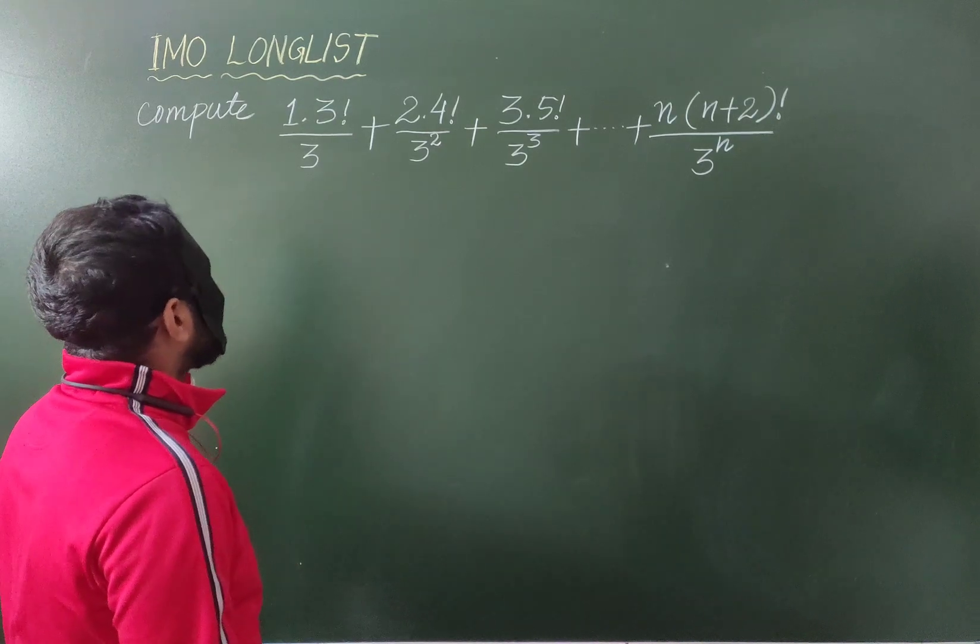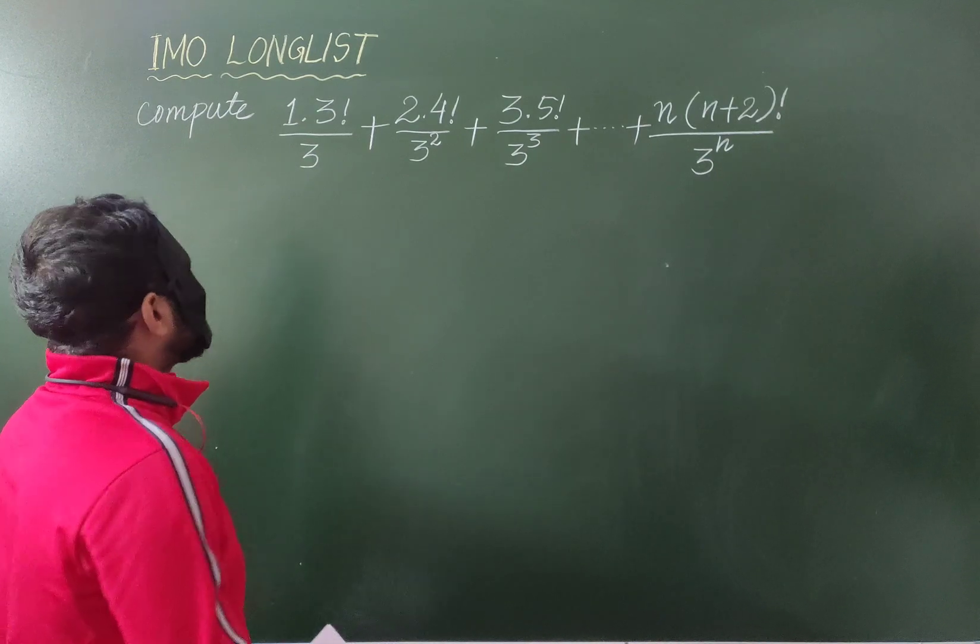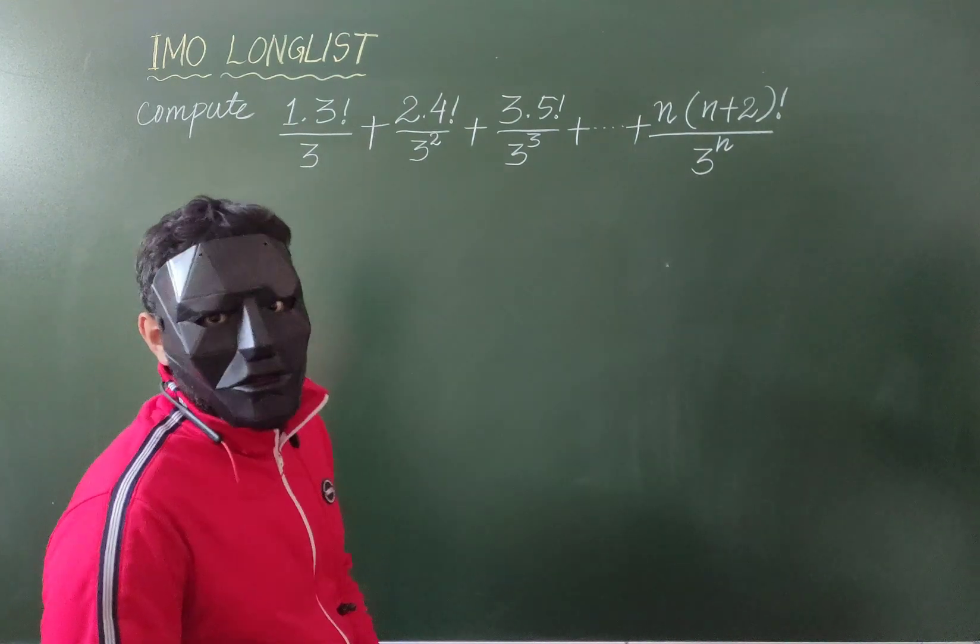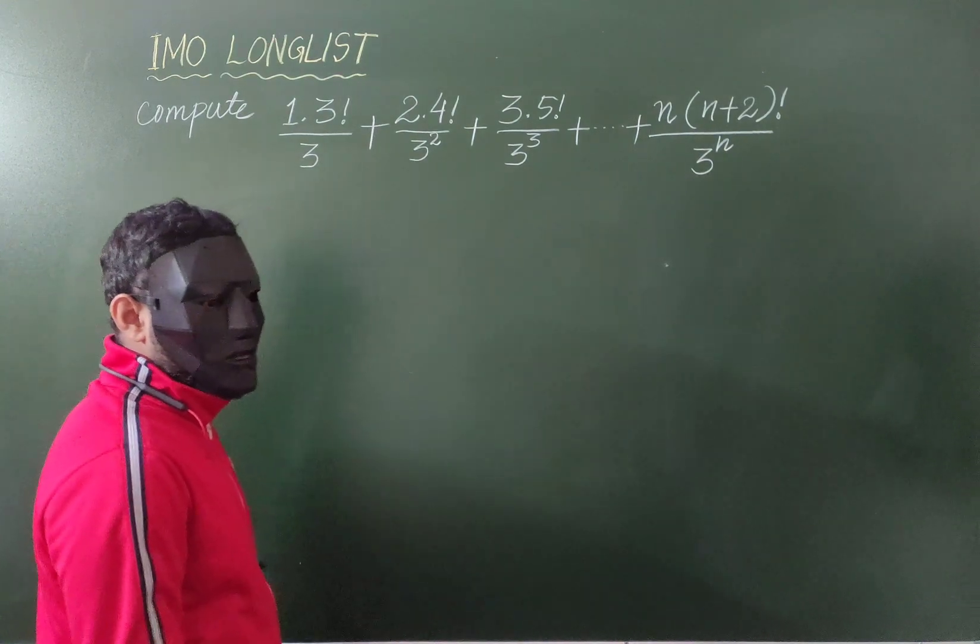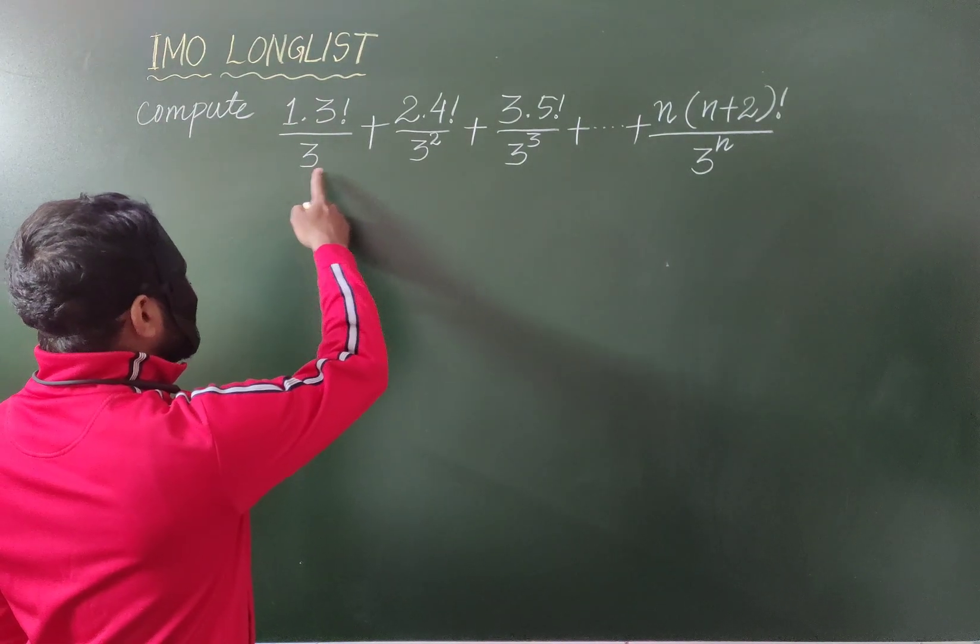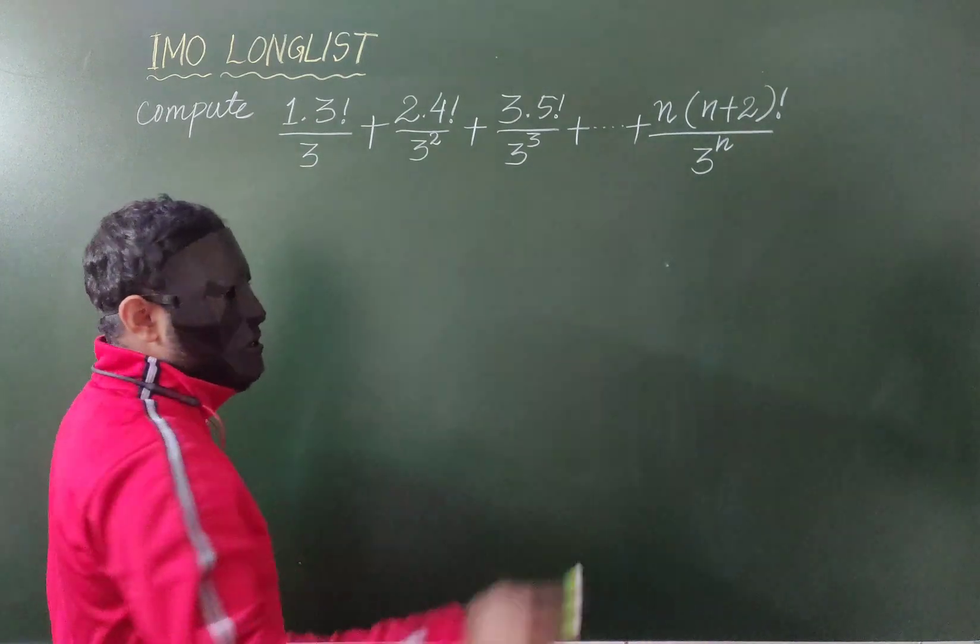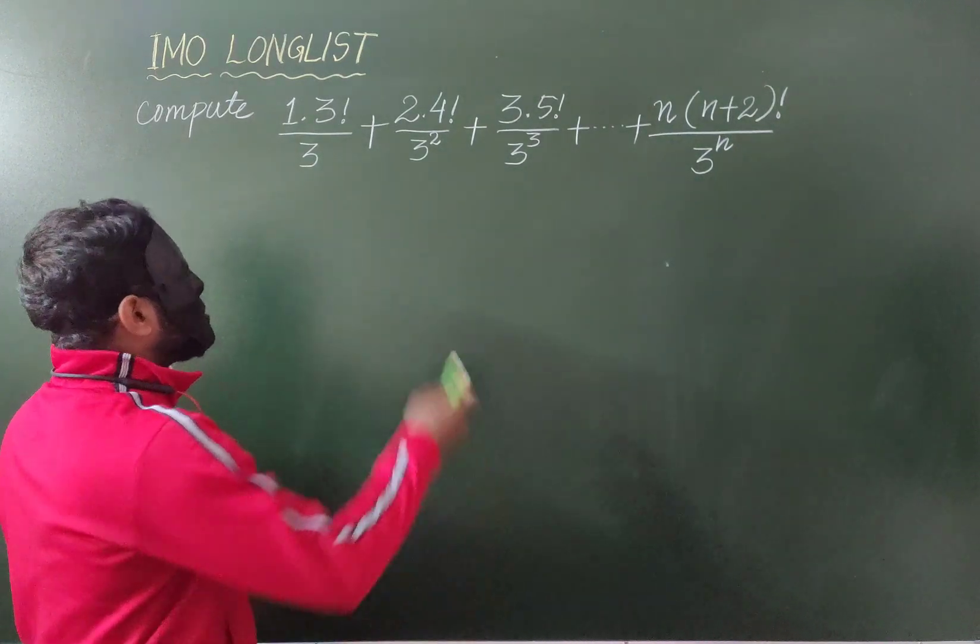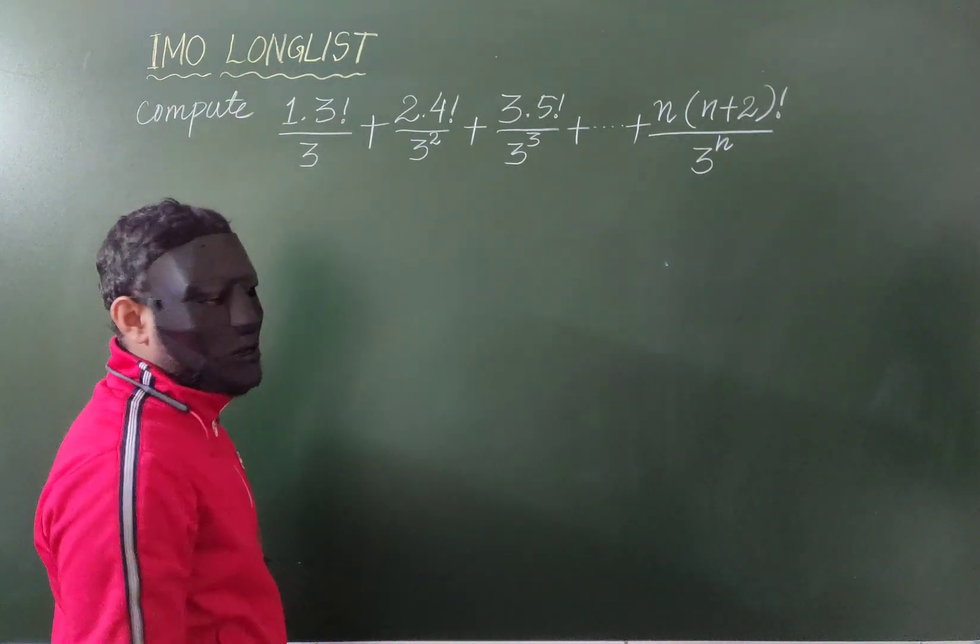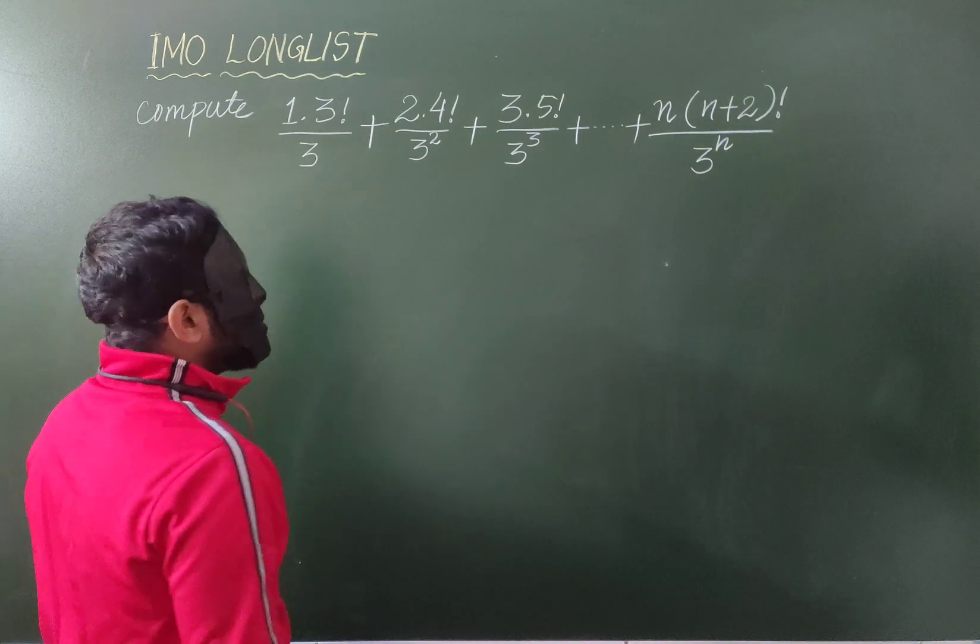Lots and lots of factorials are involved here. I think this kind of series, most of the similar series can be solved using telescopic sum. That is, we will simplify every single term in such a way that almost everything will cancel out with each other and first term and last term will be left. So let's see what can we do here.